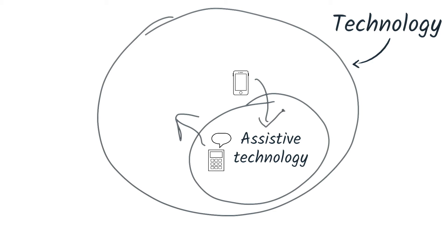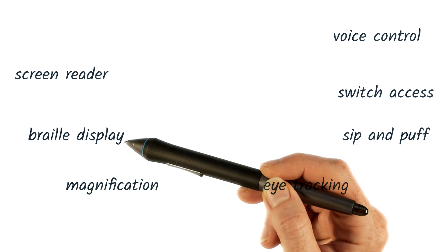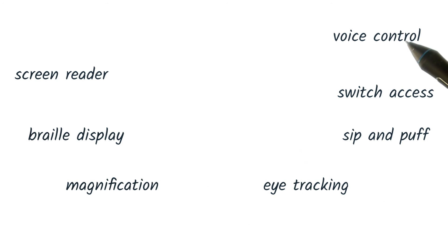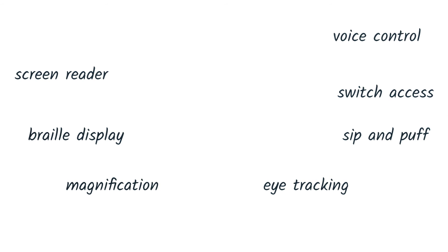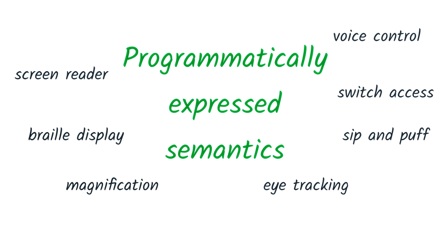In the context of web development, we're still talking about a diverse range of technologies that we want to support. People may interact with your website using a screen reader or braille display, with a screen magnifier, via voice control, using a switch device, or some other form of assistive technology, which adapts the page to create a more specific interface that they can use. For all of these technologies, ensuring that our websites support assistive technology users is going to come down to programmatically expressed semantics.